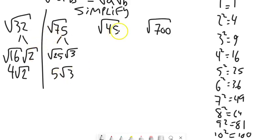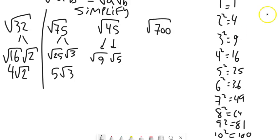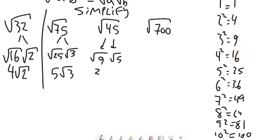Square root of 45: there's a 9 in there. If you don't see the perfect square right away, just start going down the list — does 4 go in? Does 9? Does 16? And use your calculator; there's nothing wrong with that. Square root of 9 is 3, so this is 3 root 5.